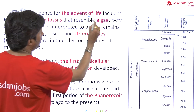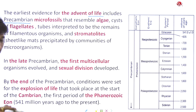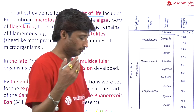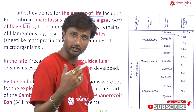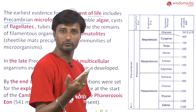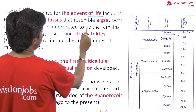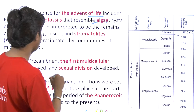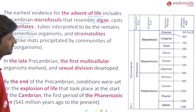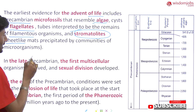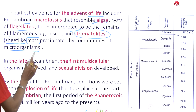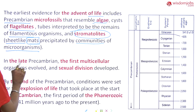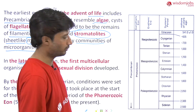The earliest evidence of the advent of life includes Pre-Cambrian microfossils. Evidence includes bacteria, blue-green algae, and the Ediacara — the first oxygen-dependent animal. Other evidence includes organisms that resemble algae and cysts of flagellates. There are also tubes interpreted as remains of filamentous organisms, and stromatolites — sheet-like mats precipitated by communities of microorganisms.